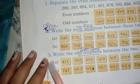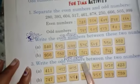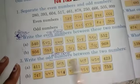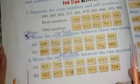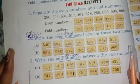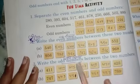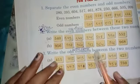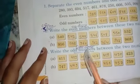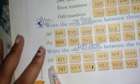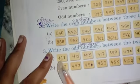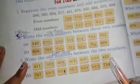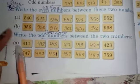So students, the third question is write the odd numbers between the two numbers. Odd numbers, which in Hindi we call visham sankhya, you have to write those. What are odd numbers? Numbers which do not come in the 2 times table and are not divisible by 2, those are our odd numbers.